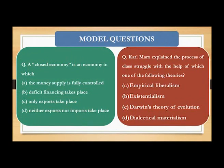Let us solve a few model questions. Question one: a closed economy is an economy in which — Option A: the money supply is fully controlled; Option B: deficit financing takes place; Option C: only exports take place; Option D: neither exports nor imports take place. The right answer is option D. A closed economy represents an isolated economy where there is no active trade with the rest of the world. It is the just opposite of an open economy.